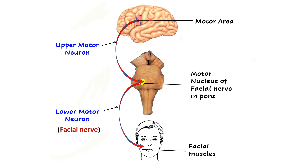The upper motor neurons synapse with the lower motor neurons present in the motor nuclei. The lower motor neurons constitute and run in cranial nerves — in this case, the facial nerve — and come in contact with the muscle fibers of the facial muscles, leading to muscle contraction. In Bell's palsy, the lesion is in the lower motor neuron, meaning in the facial nerve itself.